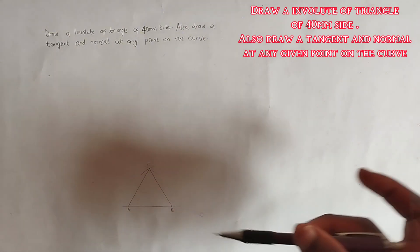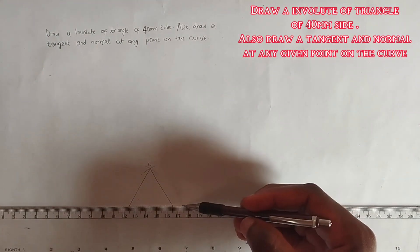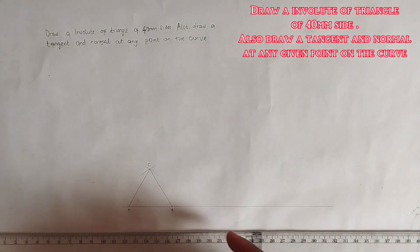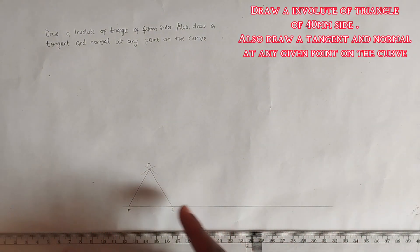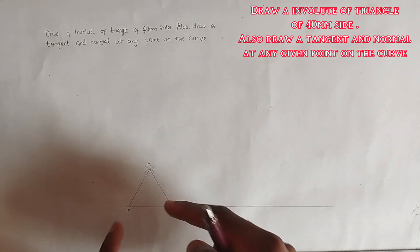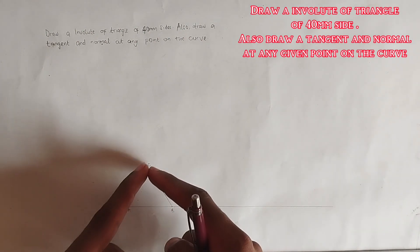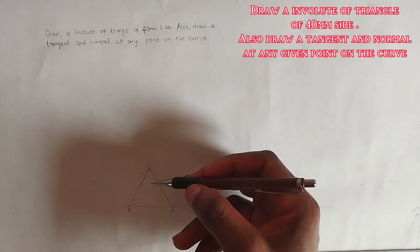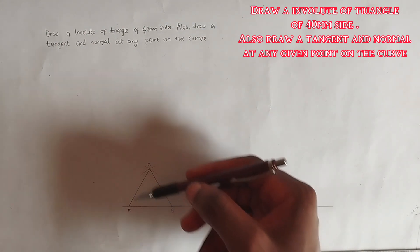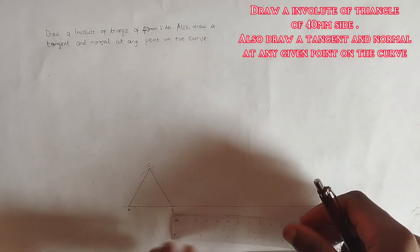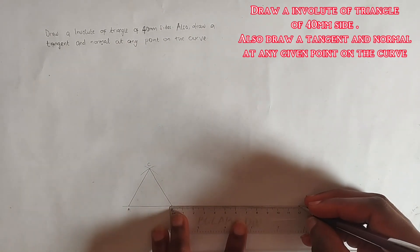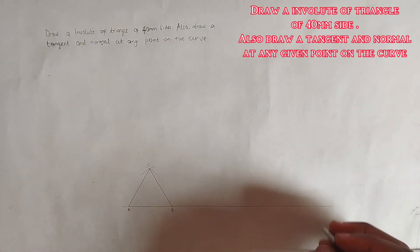In order to draw our involute we are going to be extending from point B towards the right hand side. An involute is a curve that goes around the triangle — it follows the perimeter of the triangle. Each side is 40 millimeters, so 40 plus 40 plus 40 equals 120 millimeters total. We pick 120 millimeters from this point to this point and label this as point P prime, and label the starting point as point P.